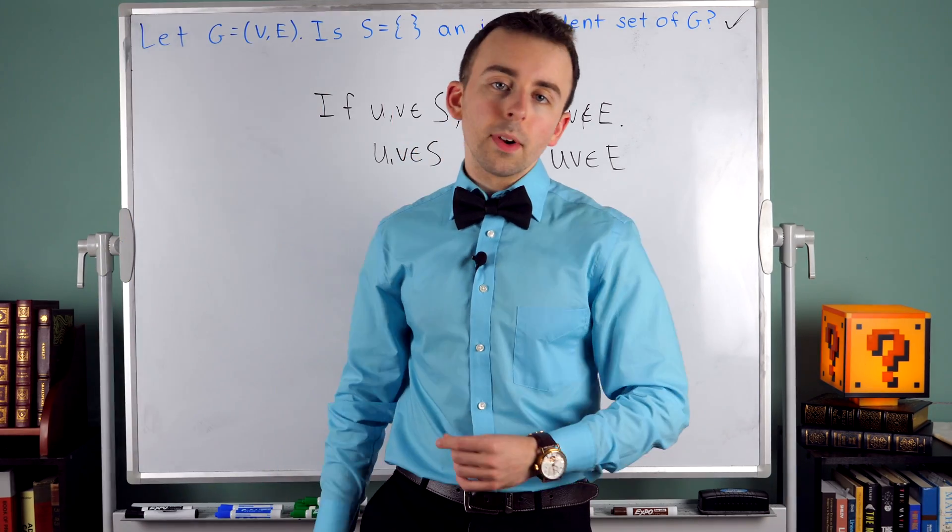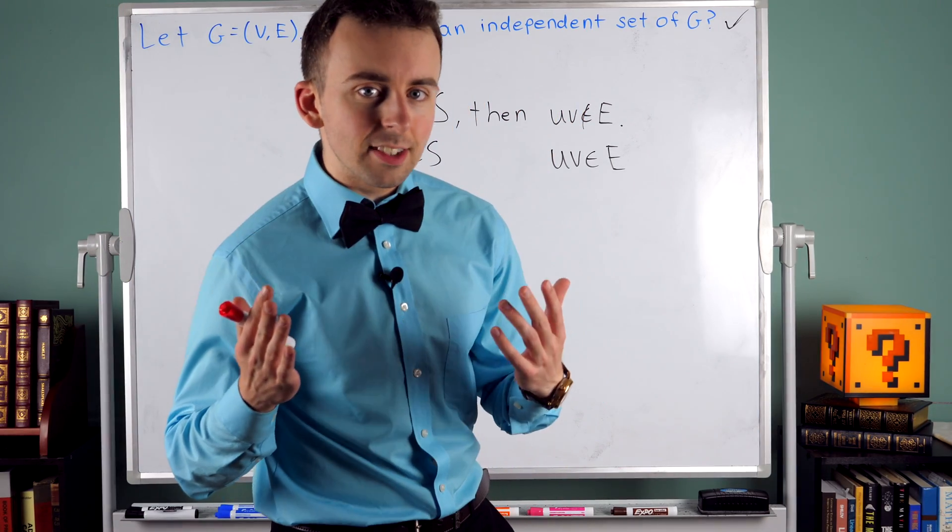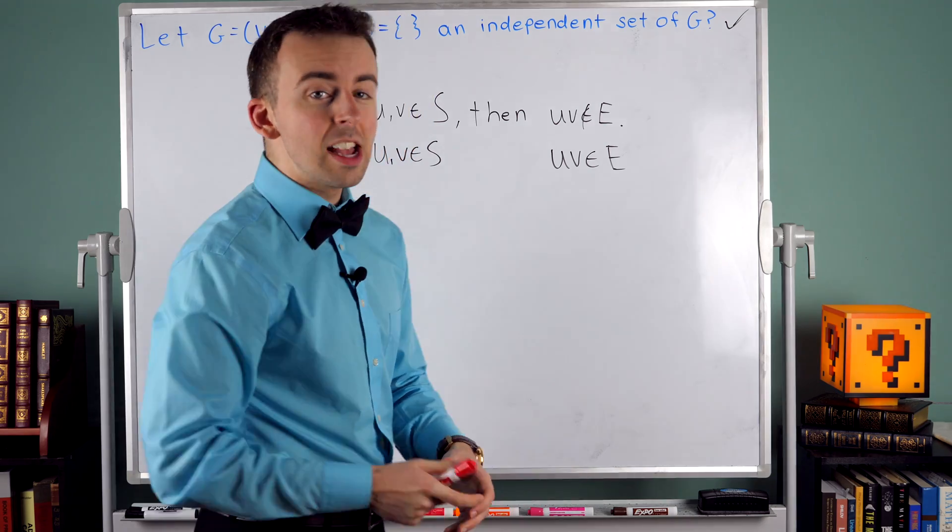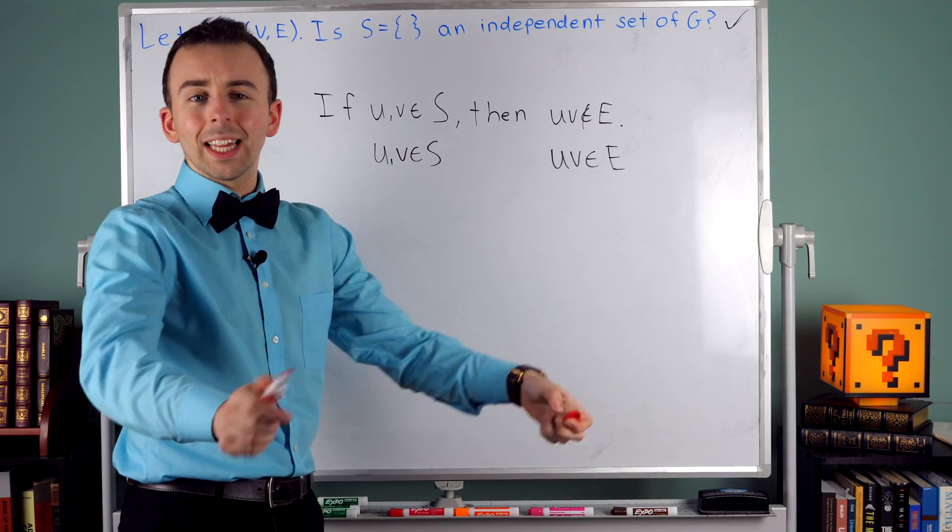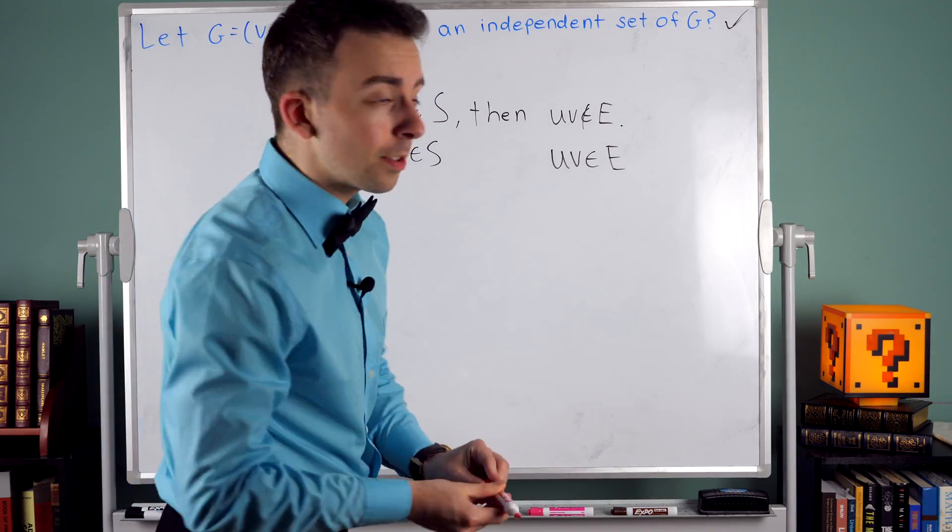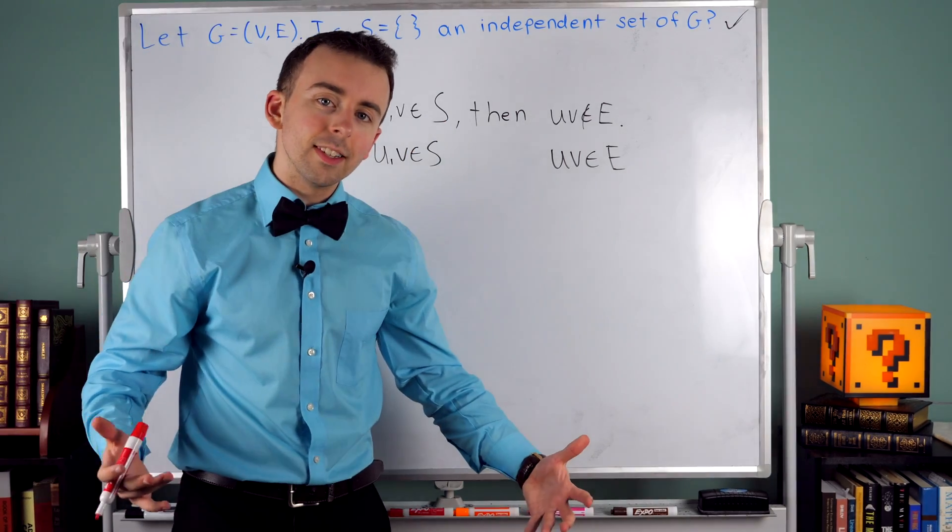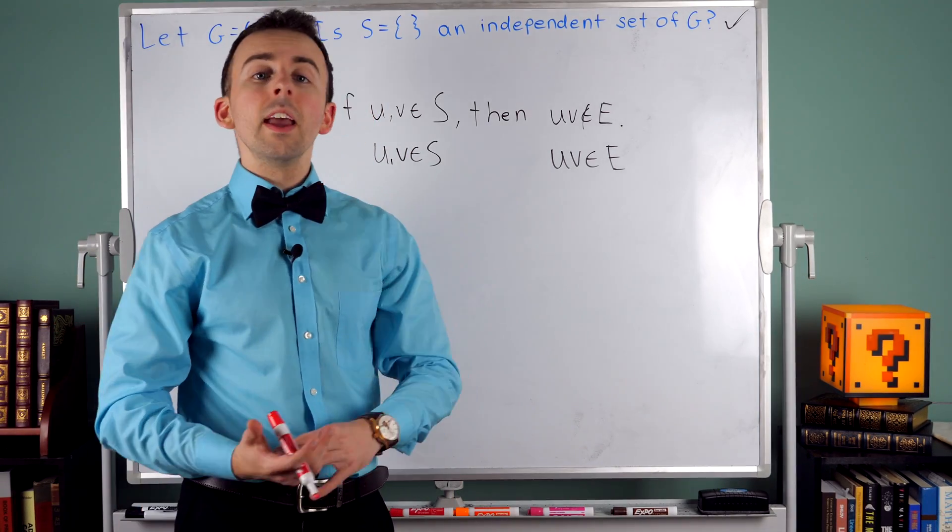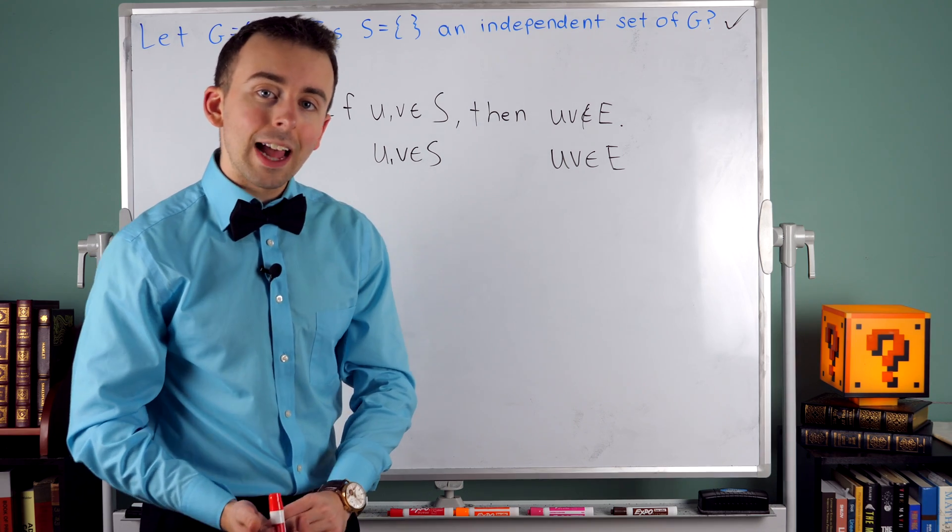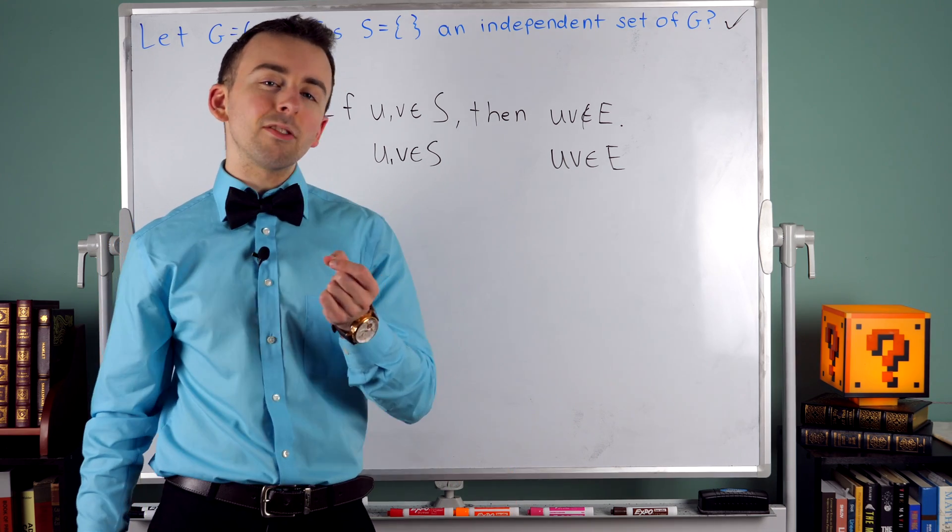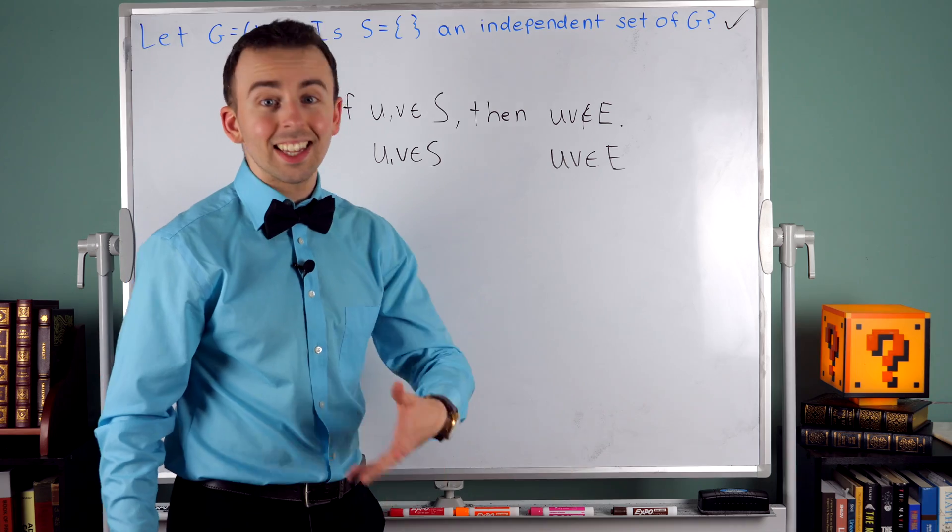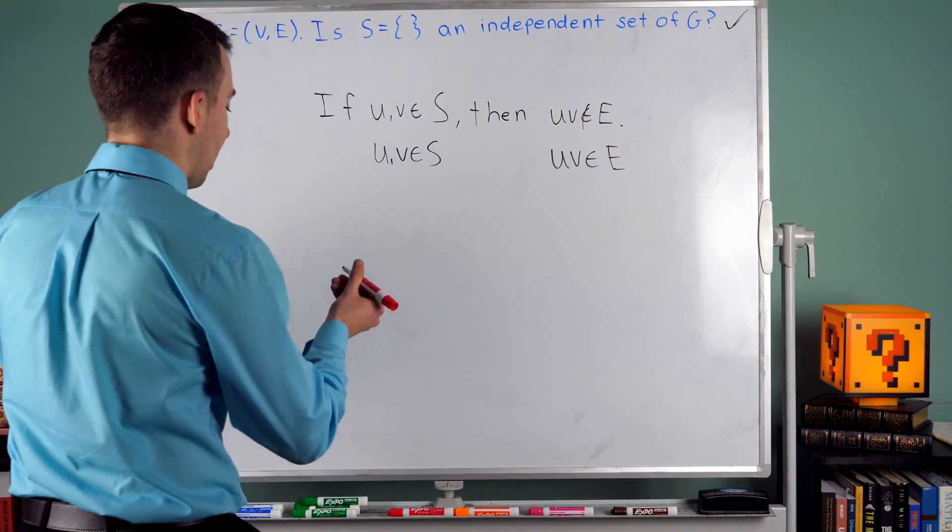We could also come to this conclusion by considering vertex covers. I'll leave a link in the description to my lesson about vertex covers. It's pretty straightforward. A set of vertices is a vertex cover if every edge in the graph is incident with at least one vertex in the set. That's what makes a set a vertex cover.